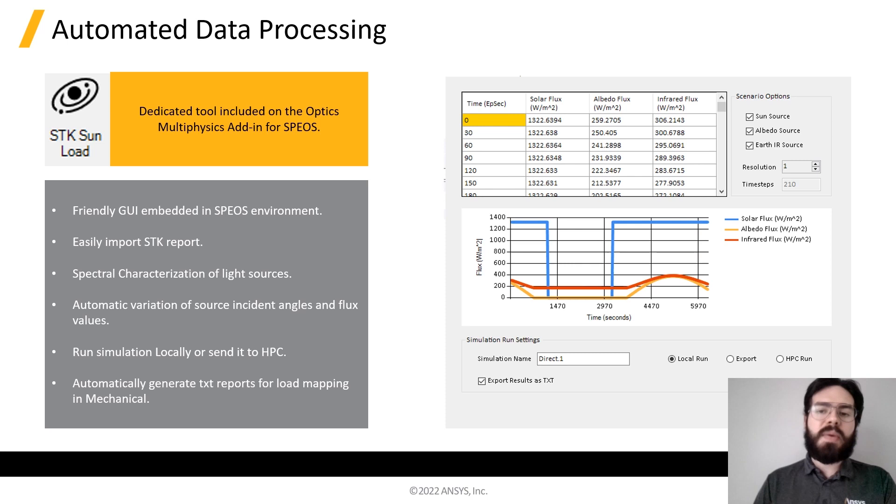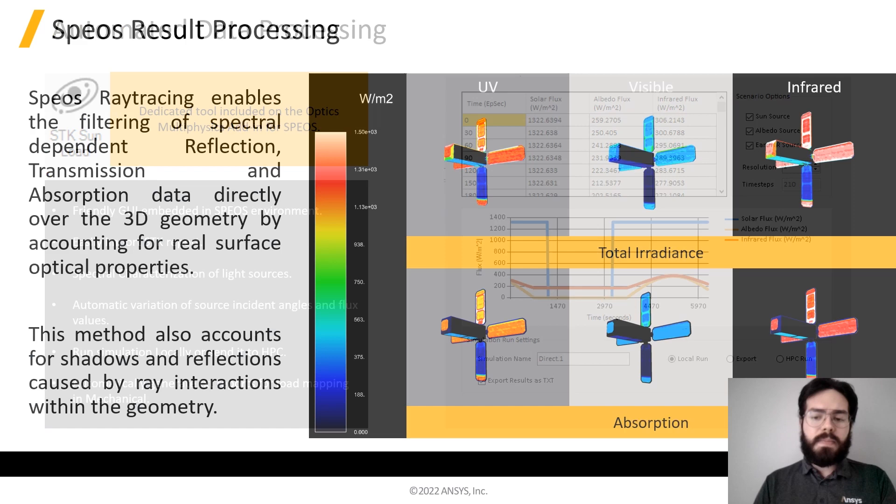There is a dedicated tool that allows to easily process the STK reports into SPEOS. It's part of the Optics Multiphysics add-in, which is available on the ANSYS App Store. Here, you can resample the orbit, link the SPEOS simulation, and define the run mode. It can be either local or sent to an HPC server. With this tool, you will also generate the files required for the thermal analysis.